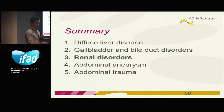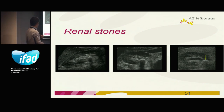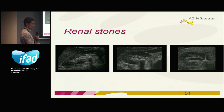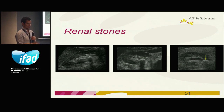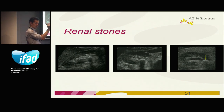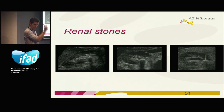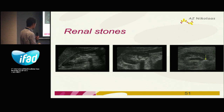Let's go to renal disorders. First, renal stones — this is the kidney, and here you see a hyperechoic region with a shadow. If you see this, it's a stone. This is also very important for bile ducts — a hyperechoic lesion with a clear shadow is a stone. Here again, this is the kidney, this is a kidney stone, and here again with a less clear shadow, but still a kidney stone.